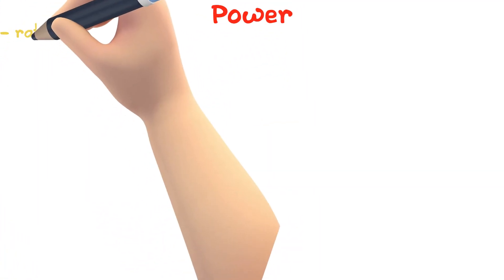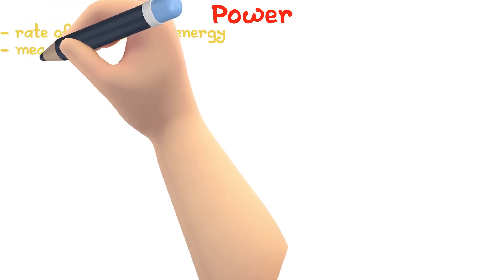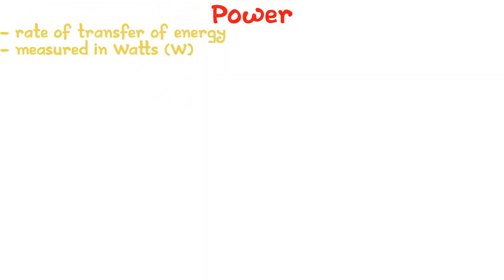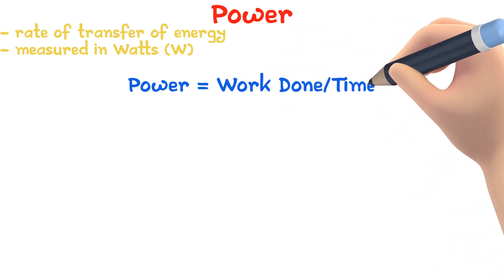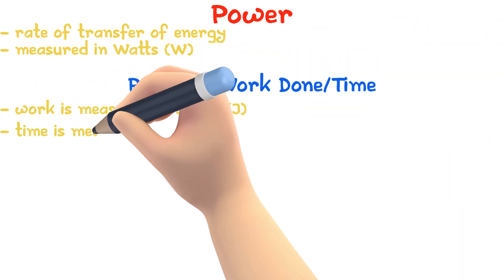Power is the rate of transfer of energy. Power is measured in watts. You can calculate power using the equation power equals work done over time taken. Work is measured in joules and time in seconds.